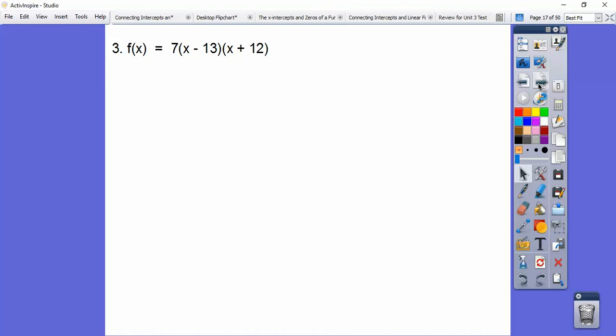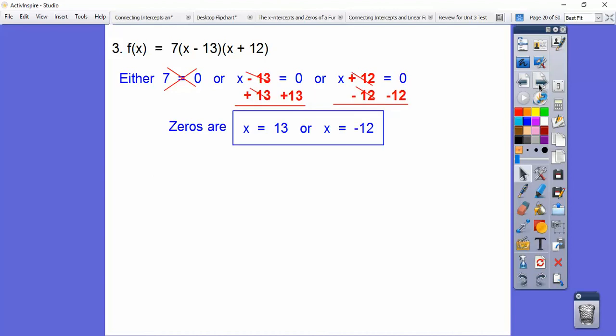Okay, so here there's three factors, you guys. 7 equals zero, or x minus 13 equals zero, or x plus 12 equals zero. Okay, well, 7 doesn't equal zero, so you can disregard that one right there. And then on this one, we add 13. On this one, we subtract 12. So we get our only two zeros on this one, our 13 and negative 12. Okay, easy, right?